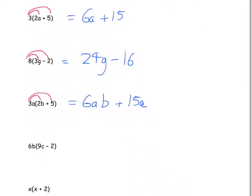6b in brackets 9c minus 2: we're going to multiply everything inside the bracket by 6b. So 6b times 9c — think about that. It should be 54bc. And secondly, what about 6b times minus 2? It should be minus 12b.